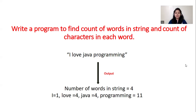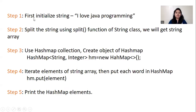Now let's see the explanation part. First we need to initialize a string: 'I love Java programming.' After that, we will split this string using the split function of the String class, and then we will get a string array. After we get the string array, we will use HashMap collection — this is a very important part of our program. Using HashMap collection we will get our output. First we will create the object of HashMap.